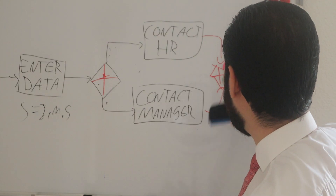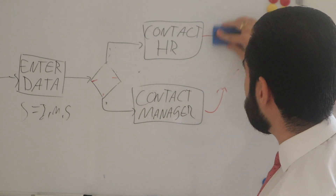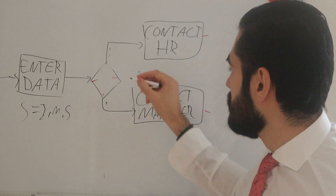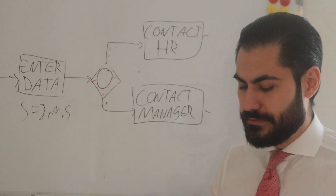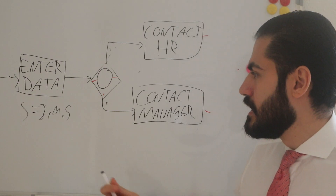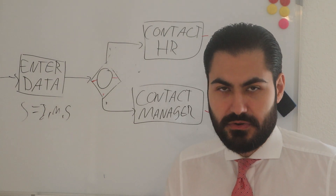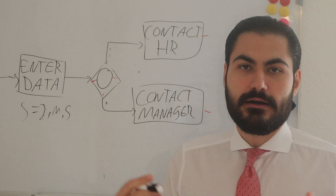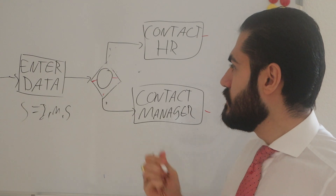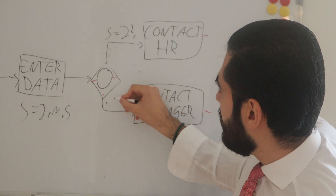Now let's look at the inclusive-or gateway. It has an O shape inside the diamond. This means something different: let's say the seniority field allows multiple values — you could be junior and medium, or medium and senior. Combinations are possible. You might ask: is the seniority equal to junior? And if it's junior and medium, you would go this route.